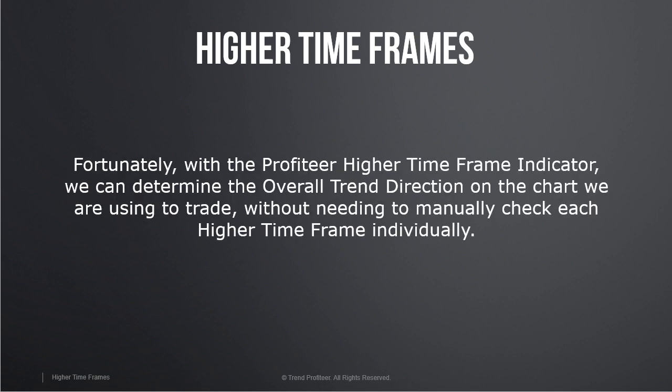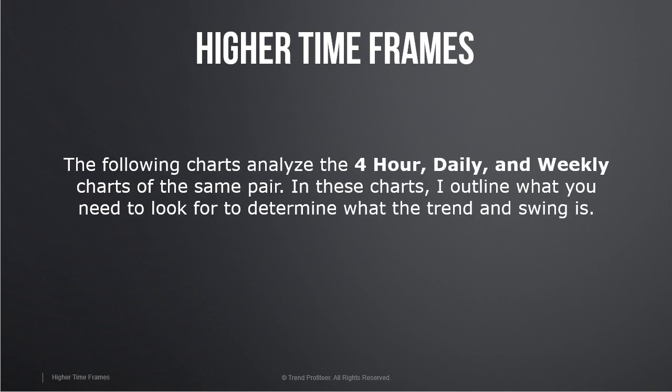Fortunately, with the Profiteer higher time frame indicator we can determine the overall trend direction on the chart we are using to trade, without needing to manually check each higher time frame individually. The following charts analyze the four-hour, daily, and weekly charts of the same pair. In these charts I outline what you need to look for to determine what the trend and swing is, and it's important to understand this so you can manually assess the higher time frames and not just rely on the display.